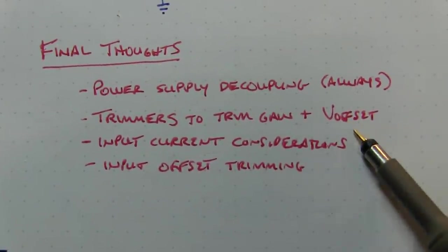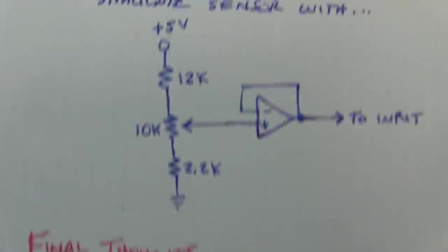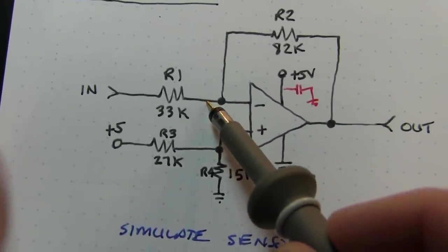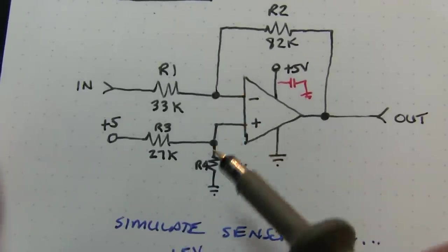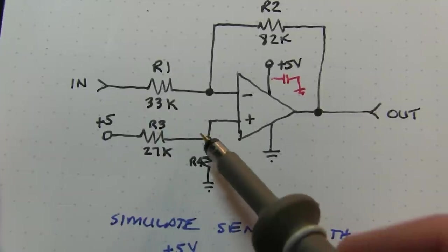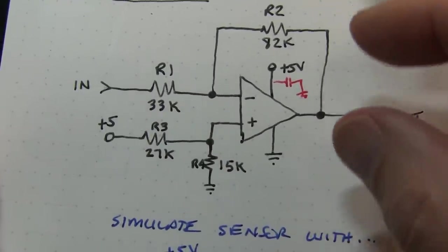Depending on how precise you needed that offset voltage to be, or the gain to be, you might choose to add some trim pots. If we put a trim pot between here and here and have the wiper go to the negative input, you could trim the gain, or you could do the same thing by inserting a trim pot here and have the wiper go to the non-inverting input to trim the offset value.